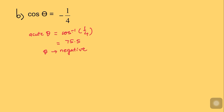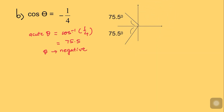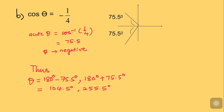Solution B: cos θ = −1/4. The acute angle is cos⁻¹(1/4) ≈ 75.5°. Since cos is negative, cos θ is negative in the second quadrant and also in the third quadrant. So the solutions are: 180° − 75.5° = 104.5° and 180° + 75.5° = 255.5°.